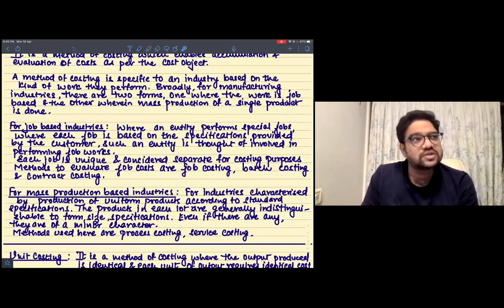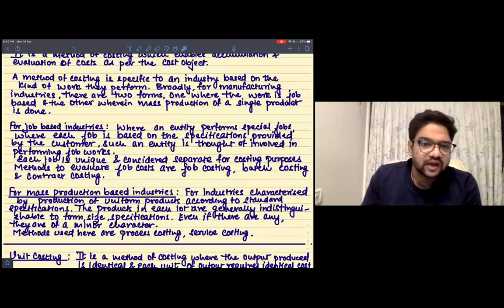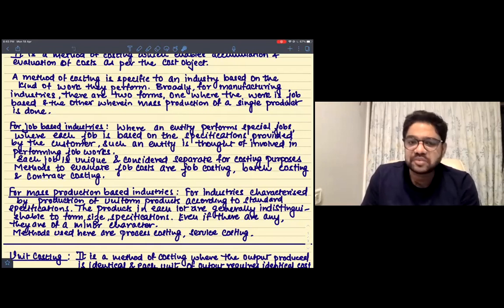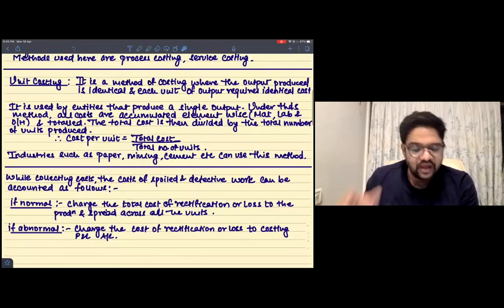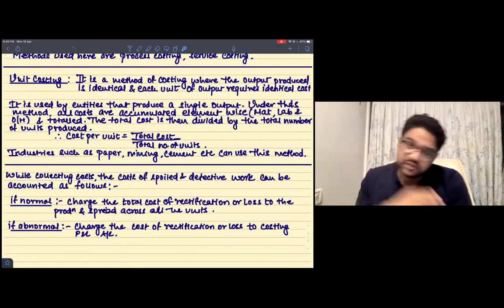Process costing or service costing. So it is a homogeneous product which is made again and again and again. The size and specifications are same, everything is same, the product is the same.